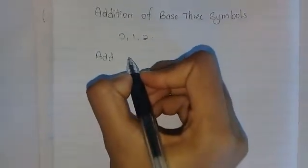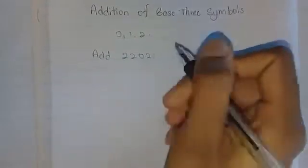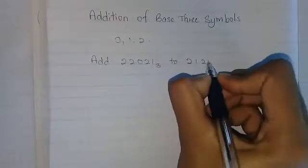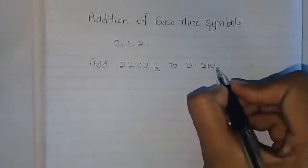So, add 2, 2, 0, 2, 1, base 3 to 2, 1, 2, 1, 0, base 3.